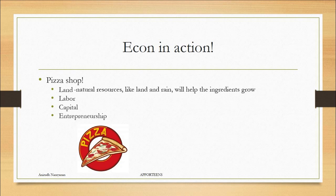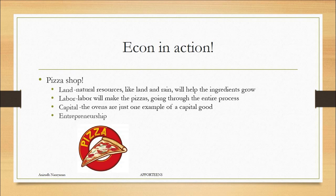In land, you're going to need to use natural resources like land and rain, which will help the ingredients grow. The labor are going to create the pizzas going through the entire process. The capital are different types of capital goods. For example, the ovens that are needed to make the pizza. And the entrepreneurship, somebody had to have the idea of making this pizza shop, which is the entrepreneur.